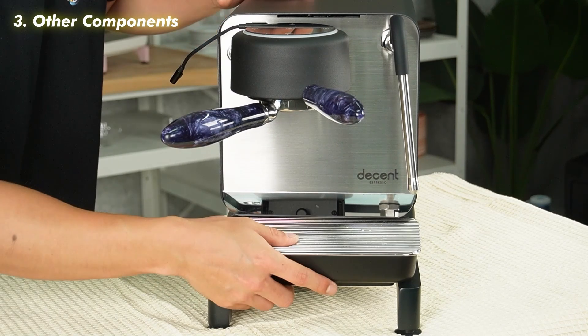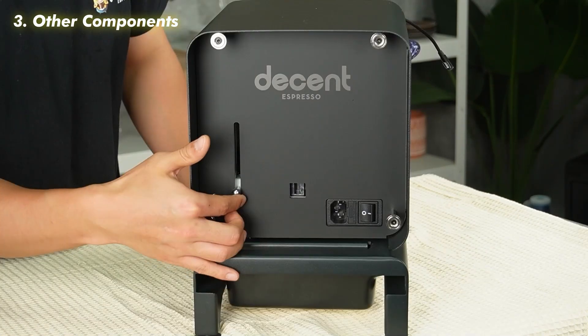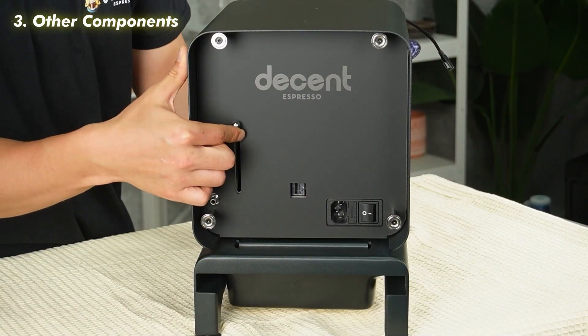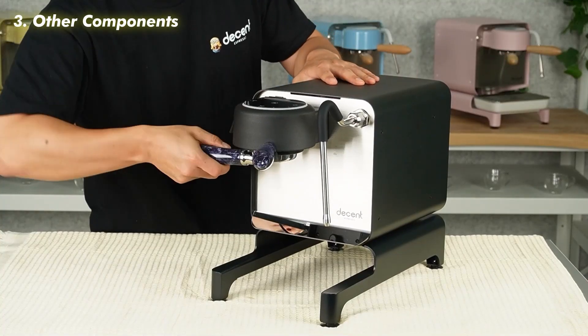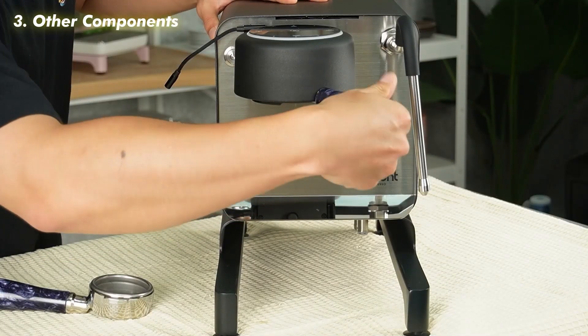Remove the drip tray and drip tray cover. Lift the lever on the back of the machine and drag the water tank out and remove it. Remove the portafilter and group head handle as well.